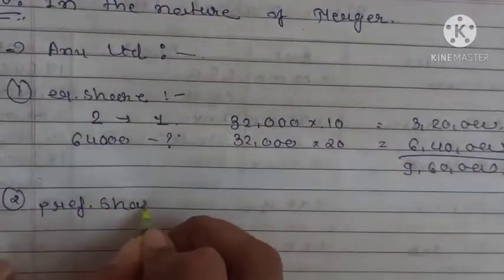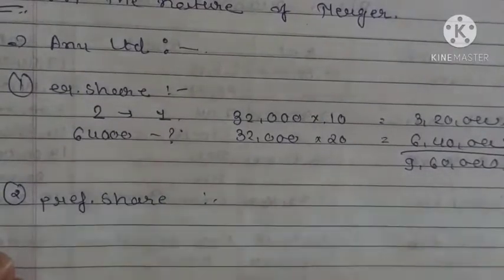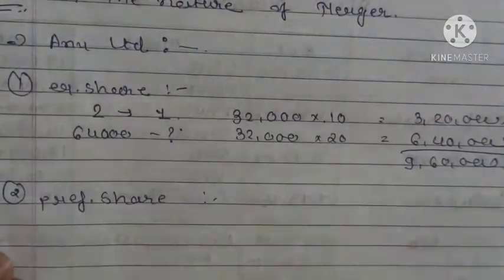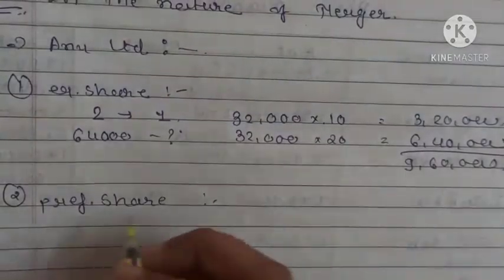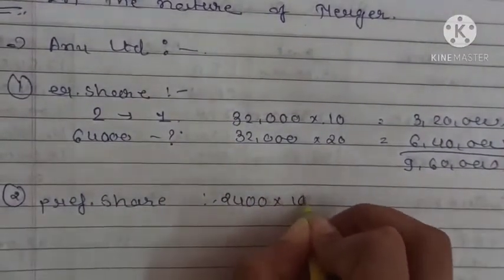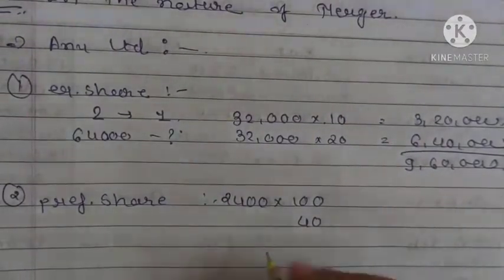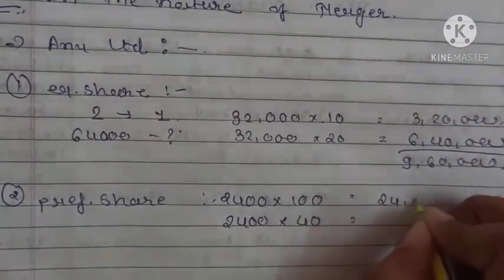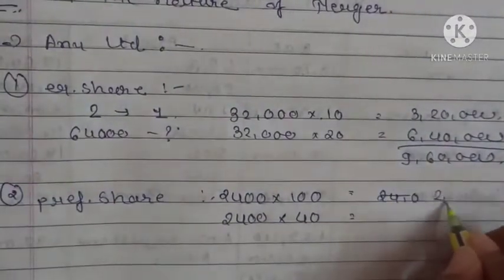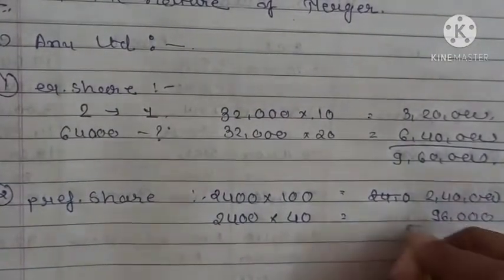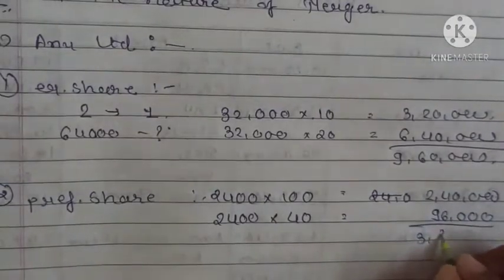Now preference shares. What is the ratio for preference shares? Both companies issue an equivalent number of 14% shares at a price of ₹140. Same amount, only the percentage is changing. Total number of shares: ₹2,40,000 ÷ 100 = 2,400. Face value ₹100, premium ₹40. Amount: ₹2,40,000 plus 2,400 × ₹40 = ₹96,000. Total preference share amount: ₹3,36,000.